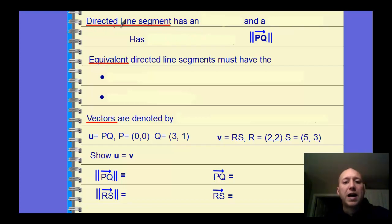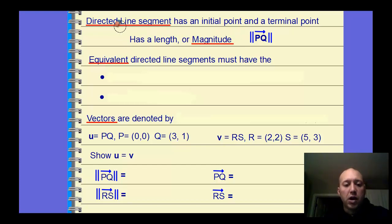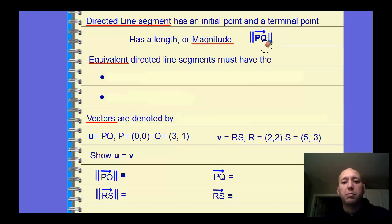First, we're going to look at what a line segment is, so back to geometry. A directed line segment has an initial and terminal point, so it has a length or magnitude. When you look at these line segments in geometry, the length can be called the magnitude and it uses this notation — the double vertical lines. So this would be line segment PQ, like a ray, just a segment, and then it has a length.